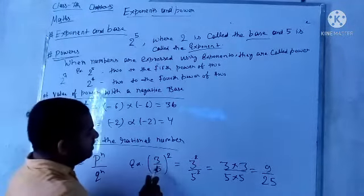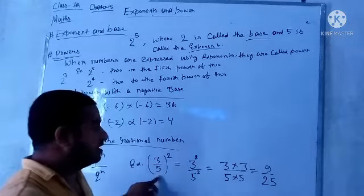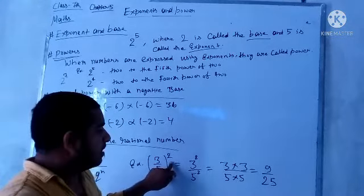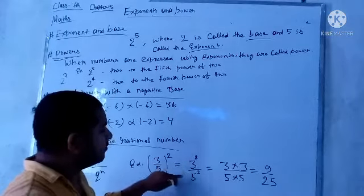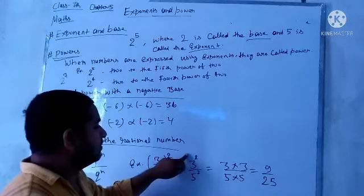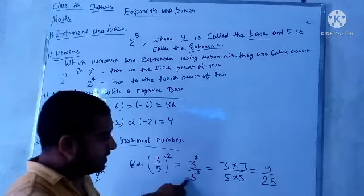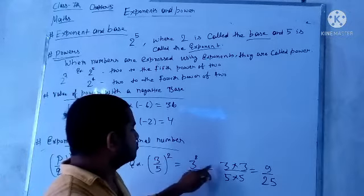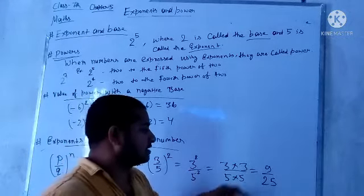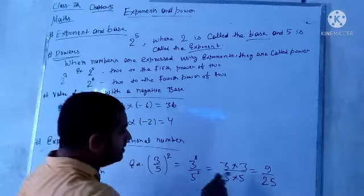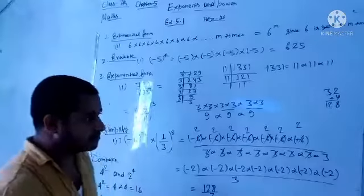For example, 3 by 5, the rational number to power 2. So, the power is 3 and 5, 2 and 5. If we solve it, 3 by 3 is 9, 5 by 5 is 25. So, the answer is 9 by 25.